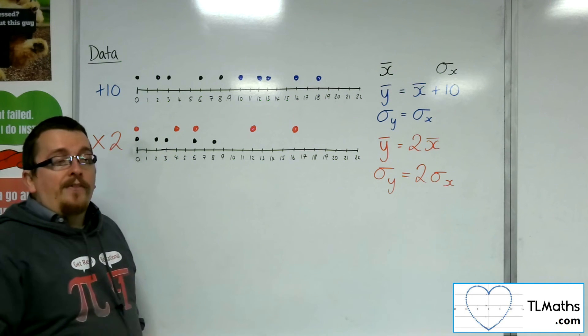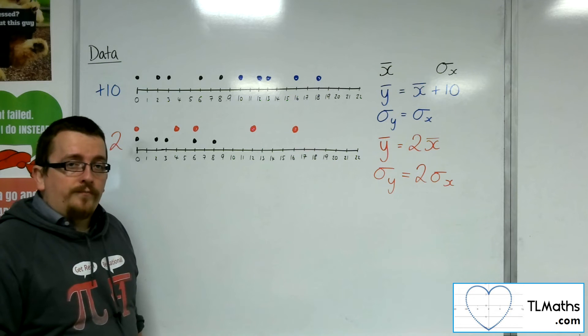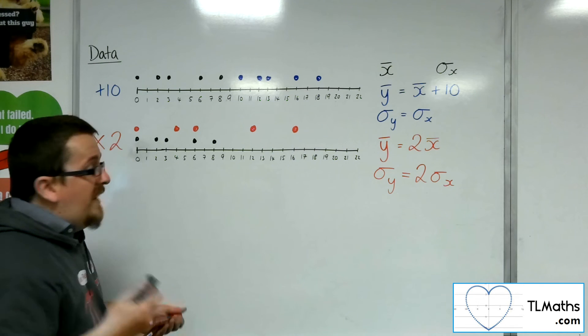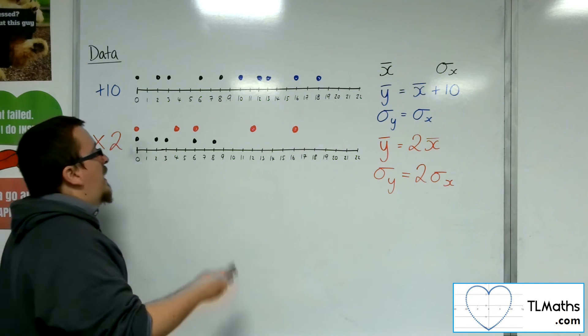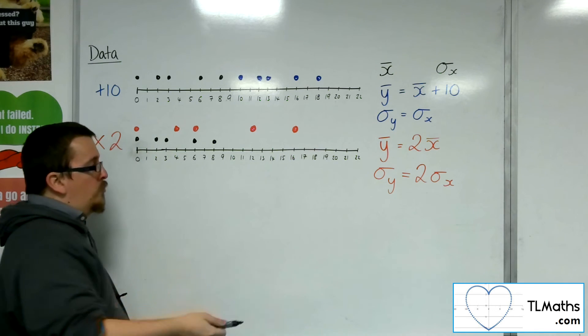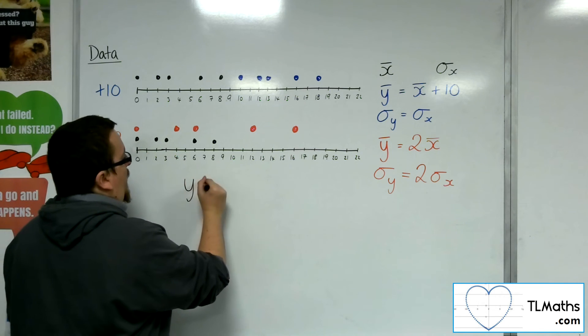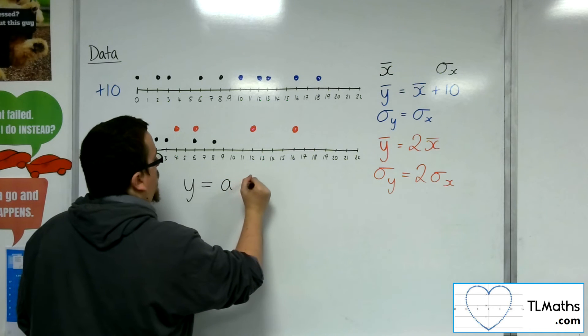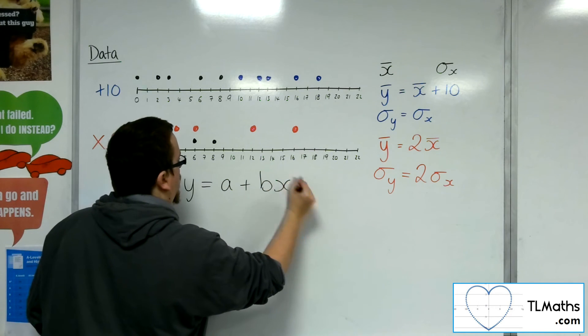So the idea here is that if the data goes through a linear transformation, let's say it's y equals a plus bx.